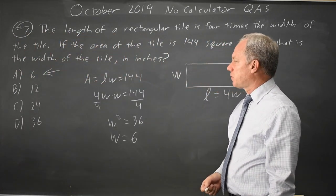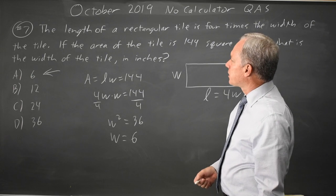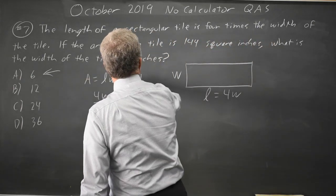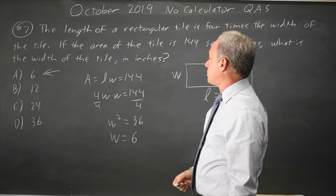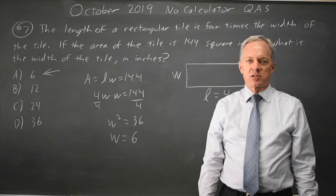If I look for the length instead, I would get 4 times that answer, but they asked for width, and they said the length is 4 times the width, so the length is the longer one and the width is the shorter one. The correct answer would be 6.